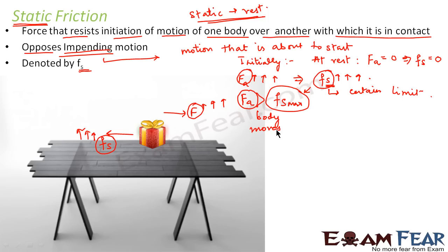So why is this friction called static friction? Because this friction comes into play when the body is at rest. It resists impending motion — that is, it resists the start of the motion and does not want the body to start moving from its position of rest. It is generally denoted by F with a subscript s.